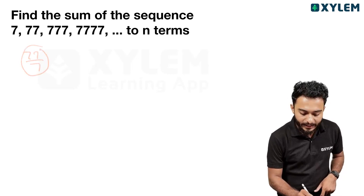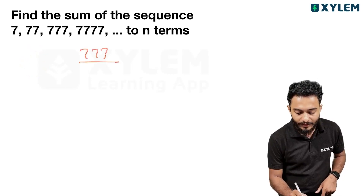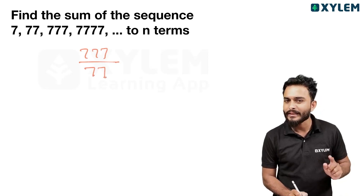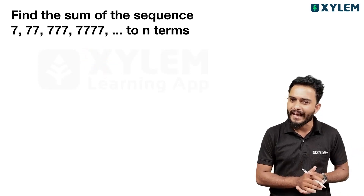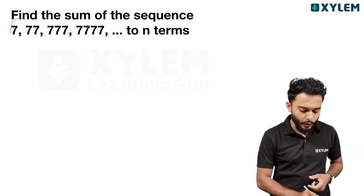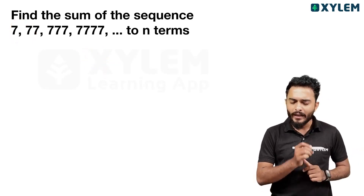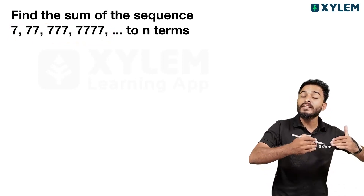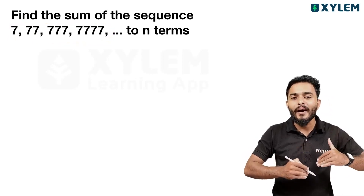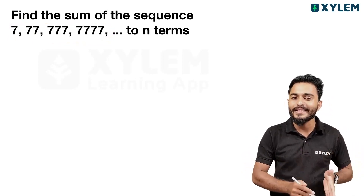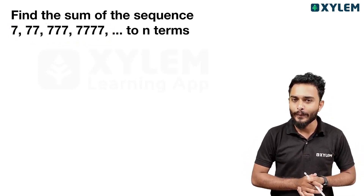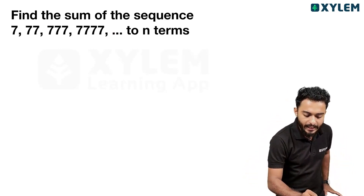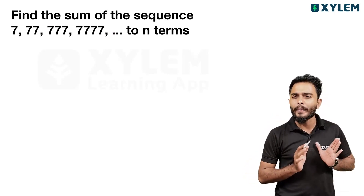If you were to write the sum of 7, 77, 777... this is the same type of question. This is the common ratio, this is a GP, and we need to find the sum of the GP using the appropriate formula.